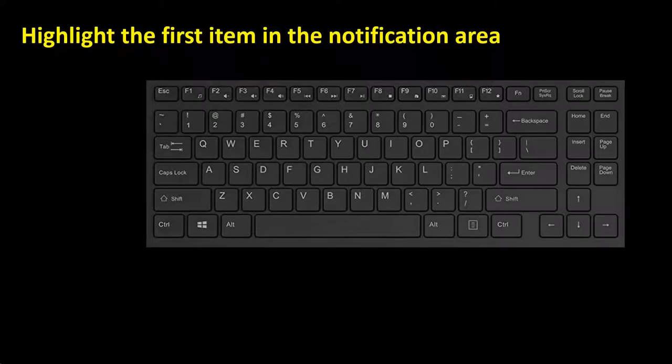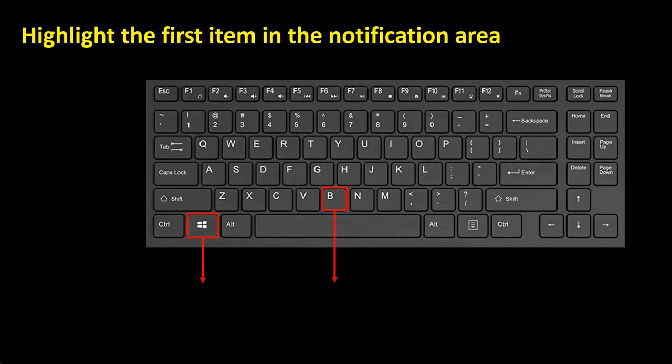Highlight the first item in the notification area: Hold the Windows key and press B.